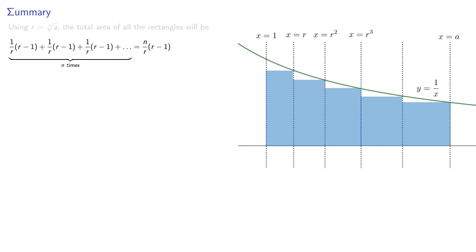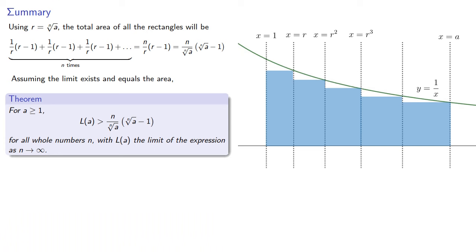And since r is the nth root of a, we can rewrite this without having to rely on r. Assuming the limit exists and equals the area, this gives us the following result: for a greater than or equal to 1, l of a is the limit as n goes to infinity of n times a to the 1 over n minus 1. All we need to do is find the limit as n goes to infinity.